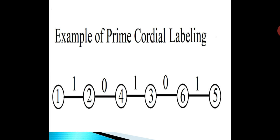In the third edge the GCD of 4 and 3 is 1, so we assign the third edge the label 1. In the fourth edge the GCD of 3 and 6 is 3, which is greater than 1, so we assign the fourth edge the label 0. In the fifth edge the GCD of 5 and 6 is 1, so we assign that edge the label 1.